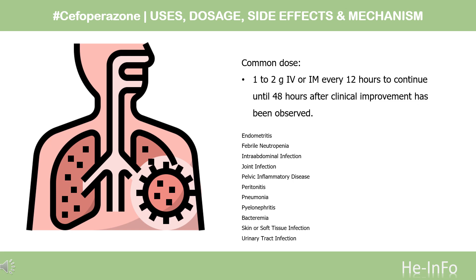Usual adult dose for endometritis: 1–2 g IV or IM every 12 hours, to continue until 48 hours after clinical improvement has been observed. Appropriate oral antibiotic therapy may continue until 14 days of therapy has been completed. Usual adult dose for febrile neutropenia: 1–2 g IV or IM every 12 hours. Therapy should be continued for 14 days, or until more specific therapy can be instituted for an identified pathogen, or until the patient has been afebrile for 24 hours after the absolute neutrophil count has reached at least 500 cells/mm³. Usual adult dose for intra-abdominal infection: 1–2 g IV or IM every 12 hours for 7–14 days. Usual adult dose for joint infection: 1–2 g IV or IM every 12 hours for 3–4 weeks; longer therapy of 6 weeks or more may be required with prosthetic joint infections. In addition, removal of the infected joint may be required.